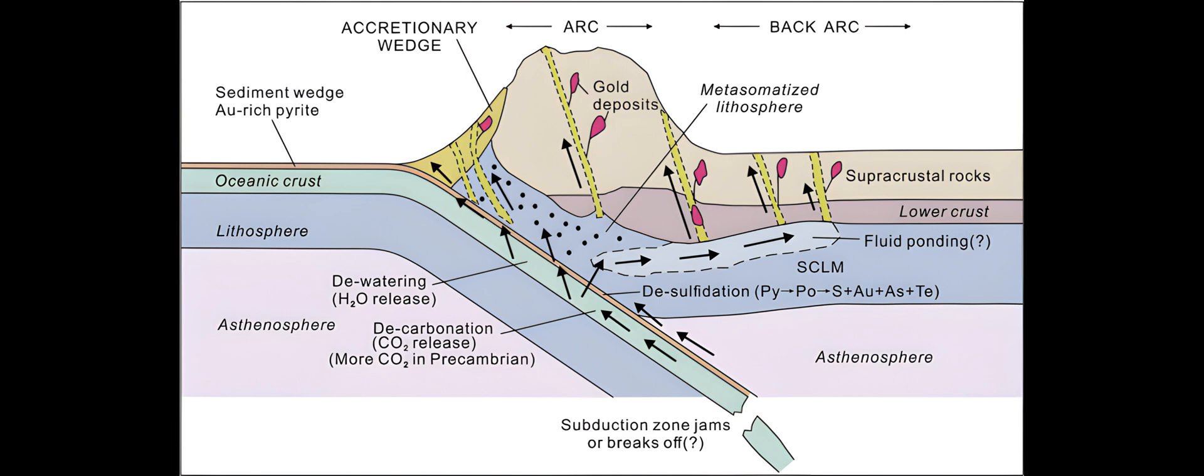Gold-bearing fluids precipitate at an upper crustal level between 3 and 15 kilometers depth, possibly up to 20 kilometers depth, forming vertically extensive quartz veins typically below the transition of greenschist to amphibolite metamorphic facies.